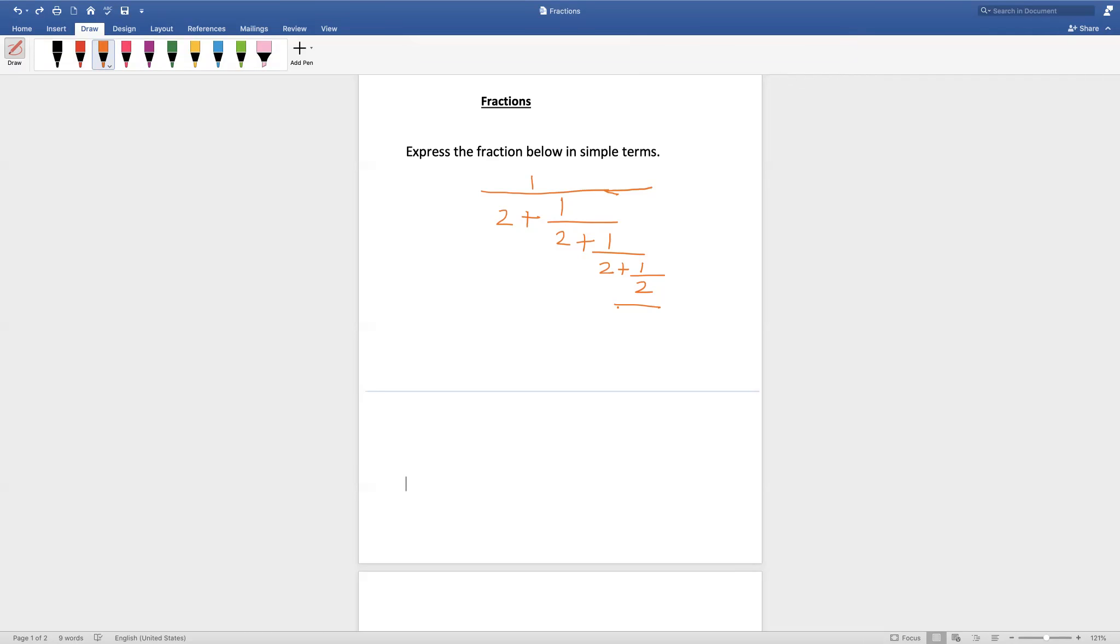First we have to solve bottom to top. As we see here, 1 half is the most bottom part. The 2 is under the 1. So now we have to add 2 plus 1 half, which is equal to 5 by 2.